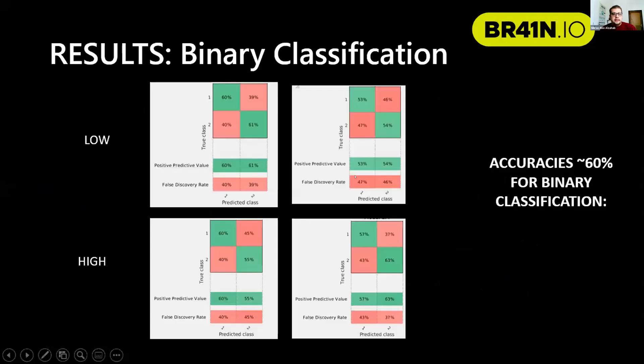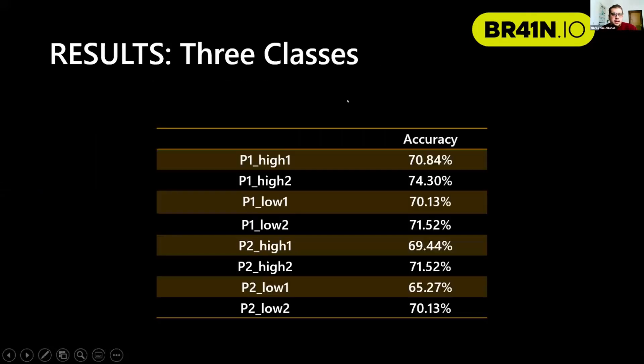For the results, for binary classification, we got an accuracy of approximately 60 percent. For the data we take that is low and relatively high, it's almost the same, around 60 percent. For the three classes, we got an accuracy of around 70 percent in general.